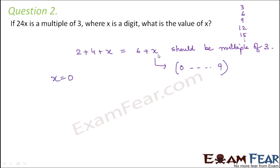So if x equals 0, then this value is 6 plus 0, that is 6, which is a multiple of 3. So this is a possible value. If x equals 1, then it becomes 7, which is not a multiple of 3. If x equals 2, then it becomes 8, again not a multiple of 3. But if x equals 3, then it becomes 9, which is a multiple of 3.